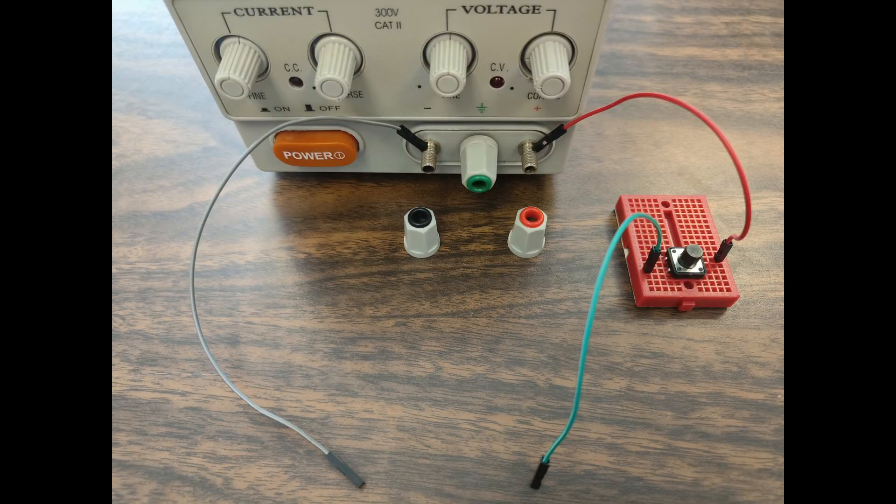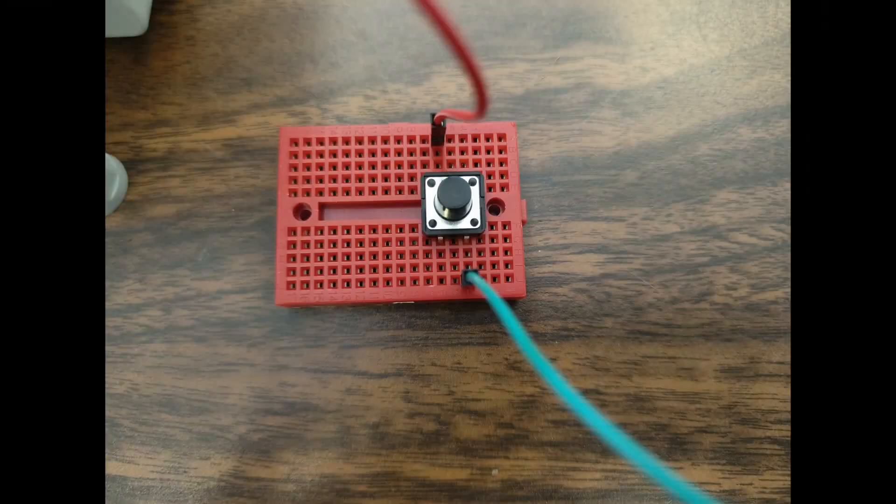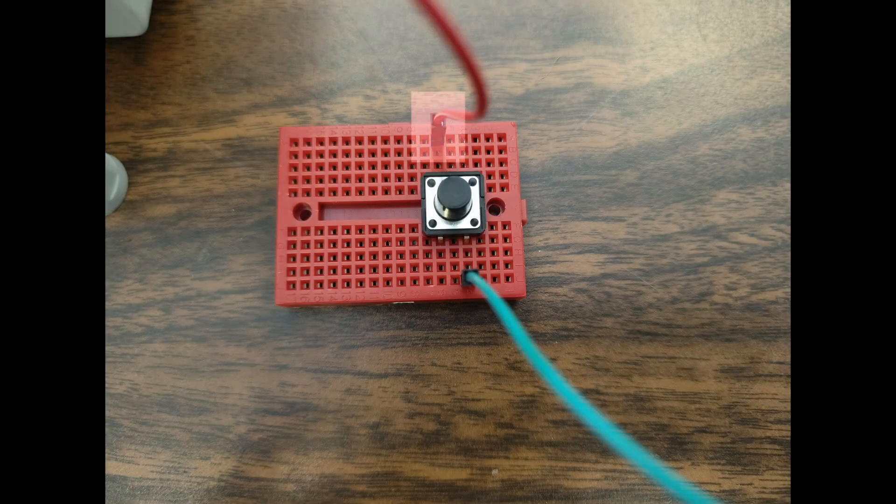Now, attach the connectors to the negative and positive terminals of the DC power supply. Plug one of the connectors into the breadboard, plug in the push button, and plug in the third connector as shown in this image. Make sure the two connectors are connected to the opposite corners of the push button.